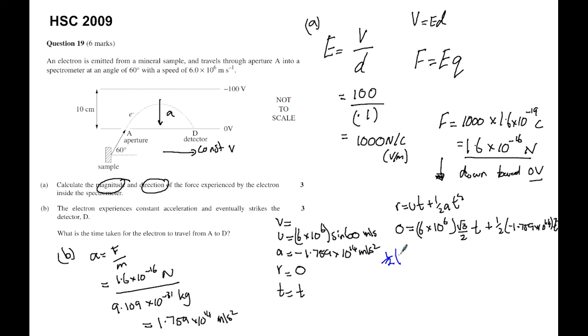And then I get a half multiplied by negative 1.759 by 10 to the power of 14 like so, t squared is equal to 6 by 10 to the power of 6.